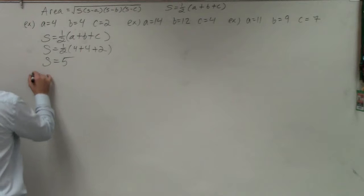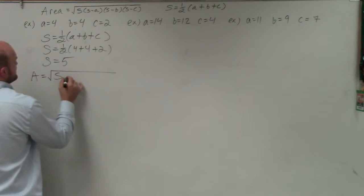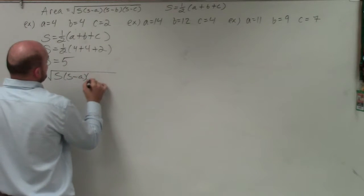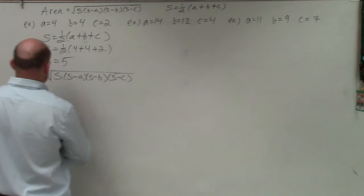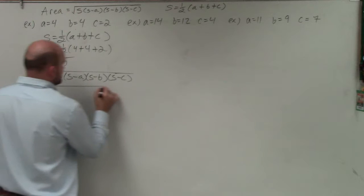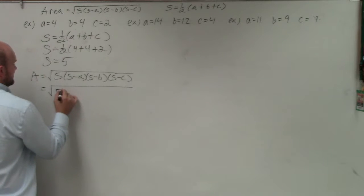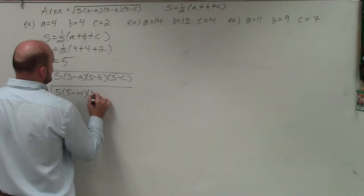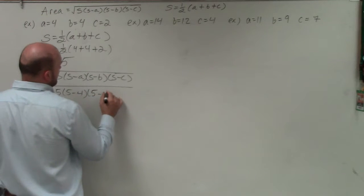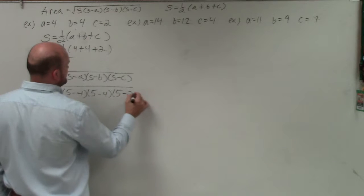Then we plug it into our formula. Area equals s times s minus a times s minus b times s minus c. So therefore, we have the square root of 5 times 5 minus a, which is 4, times 5 minus b, which is 4, times 5 minus c, which is 2.